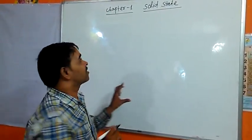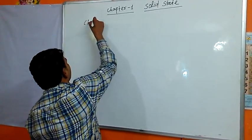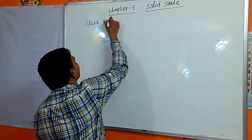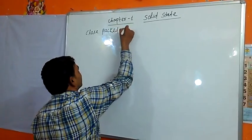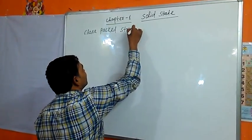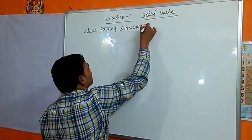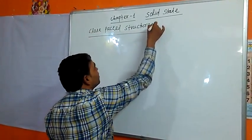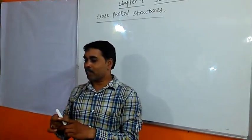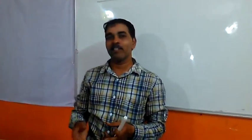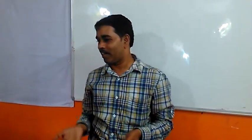Today we will discuss about the close packed structures. Close packed structures in solids. So how the close packing will occur? First the close packing will occur in 1 dimension, then 2 dimensions, then 3 dimensions.